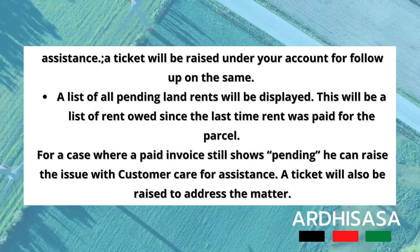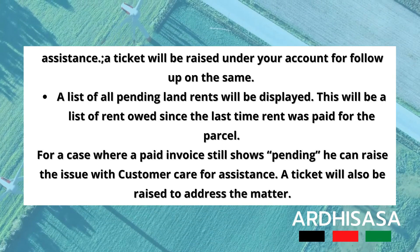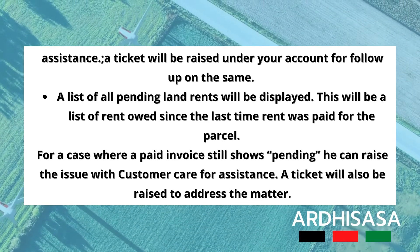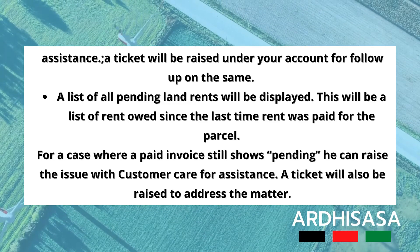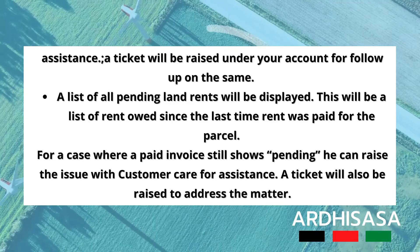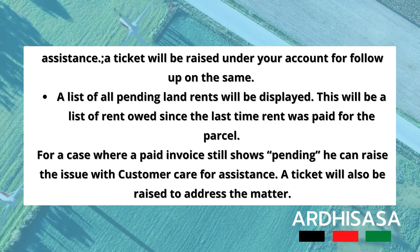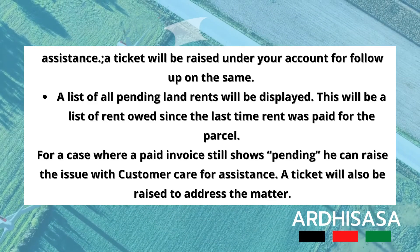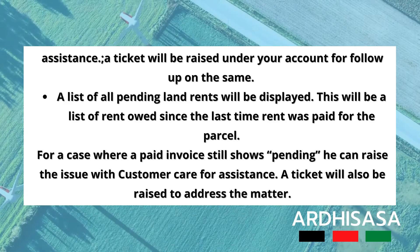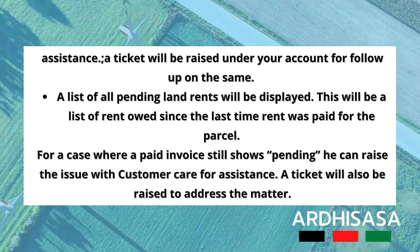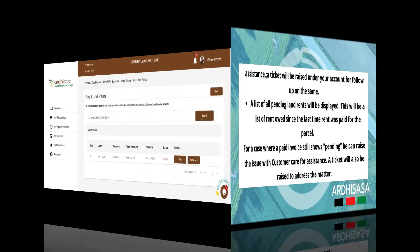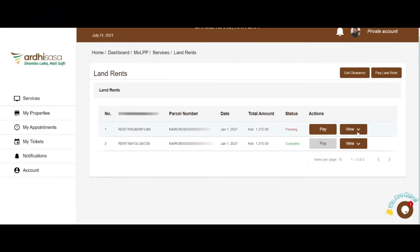Another response that you might receive is that a list of all the pending land rents will be displayed. This will be a list of rent owed since the last time rent was paid for this particular parcel. For a case where a paid invoice still shows pending, you can raise the issue with the customer service center. They will raise a ticket on your behalf to address the matter. From the list of invoices provided, you can click on the View Invoice option to see the full details of the invoice, inclusive of the penalties, if any.